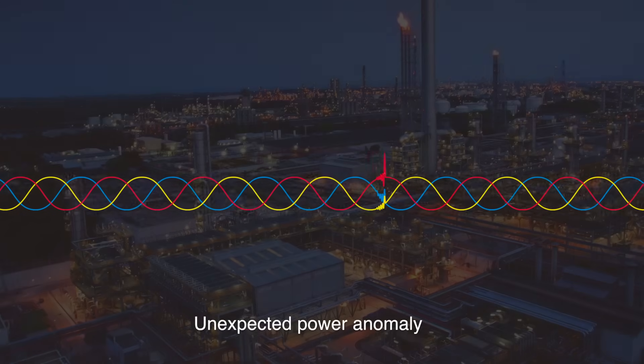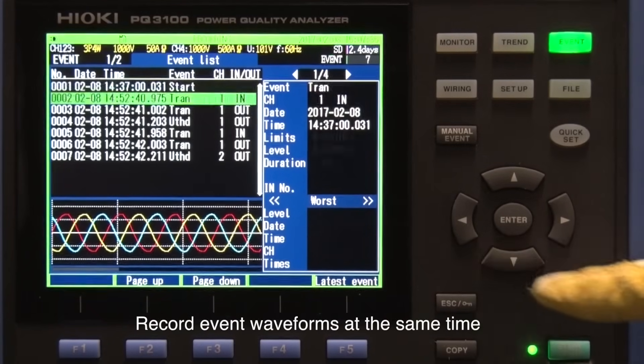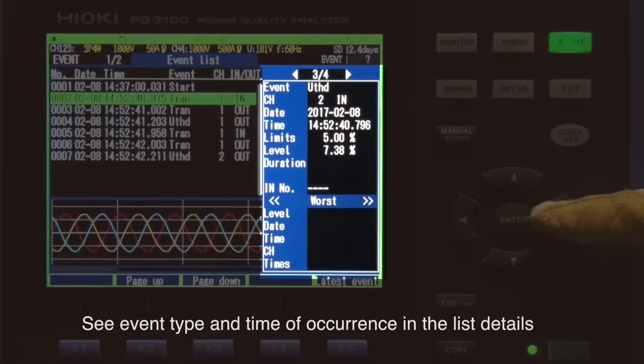When a power anomaly occurs, the device records the details of the anomaly as well as the event waveform at the same time.